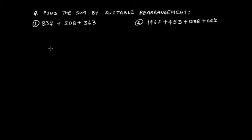Whenever you are asked such questions where you have to make rearrangements and find a sum or product, keep one thing in mind: always make the arrangement so that you get a zero as the last digit of a number. Like here, 7 gets attracted towards 3 — 7 plus 3 makes 10 — so if we group 837 and 363 together we will surely get a zero as the last digit, which simplifies our further addition.